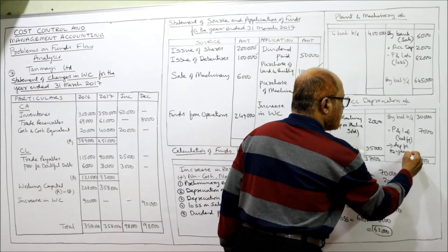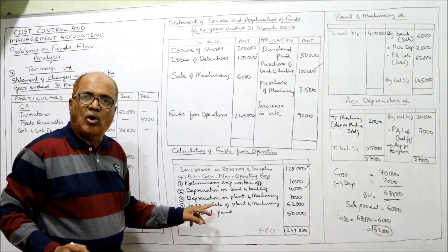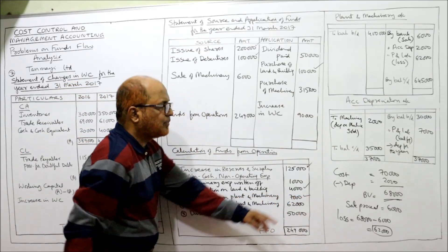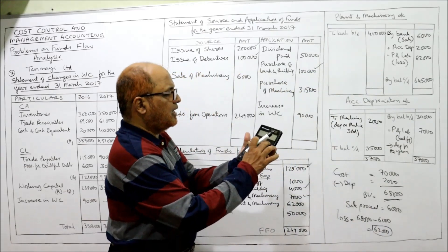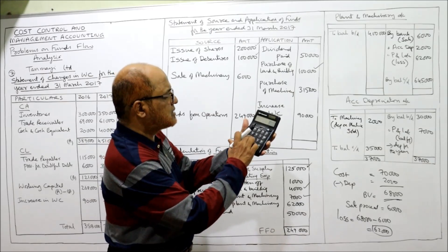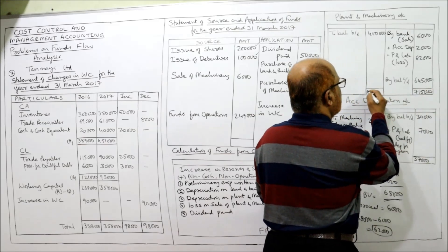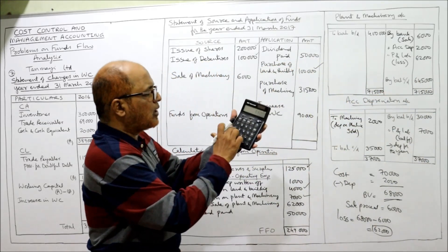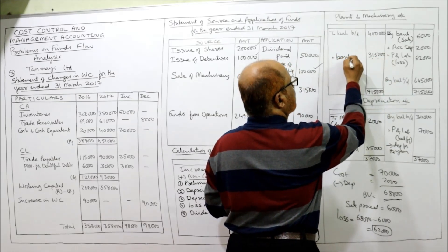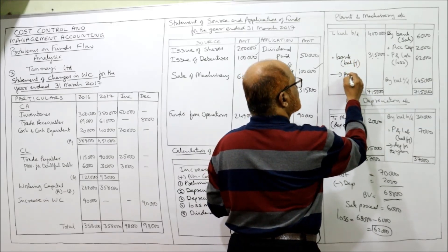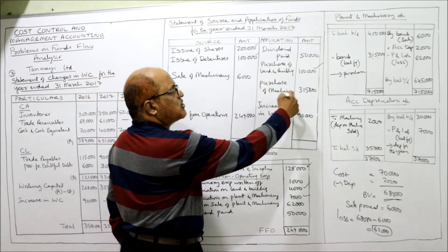This seven thousand depreciation on plant and machinery is taken as a non-cash item. For the purchase calculation, take the total on the credit side: six thousand plus two thousand plus sixty-two thousand plus six lakh forty-five thousand equals seven lakh fifteen thousand. Seven lakh fifteen thousand minus four lakh equals three lakh fifteen thousand. So three lakh fifteen thousand is the purchase of machinery — taken on the application side. Loss on sale of plant and machinery sixty-two thousand is added back. Sale of machinery six thousand on the source side.